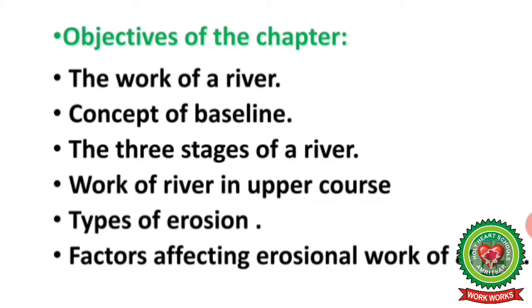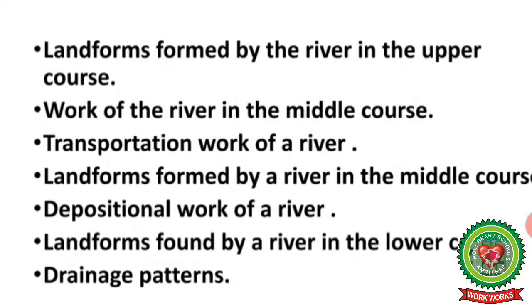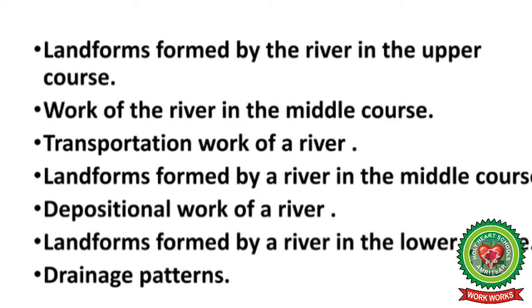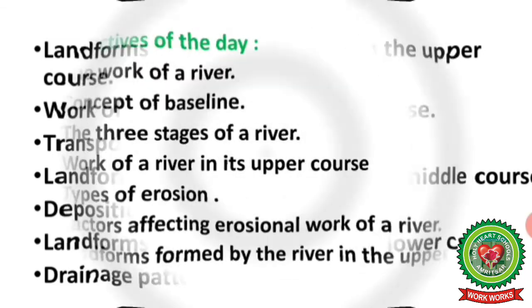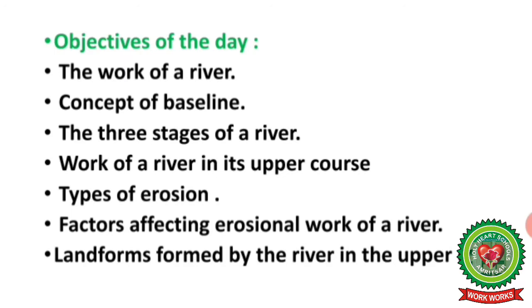The objectives include: the three stages of a river, work of the river in its upper course, types of erosion, factors affecting the erosional work of a river, landforms formed by the river in the upper course, work of the river in the middle course, transportation work of a river, landforms formed in the middle and lower course, depositional work, and drainage patterns.